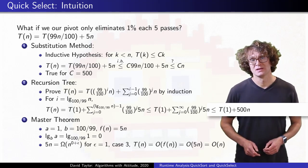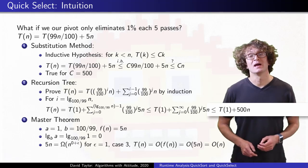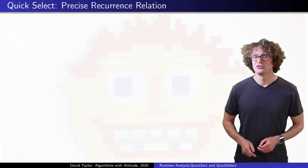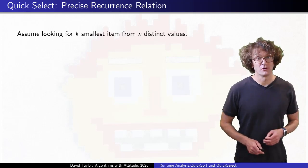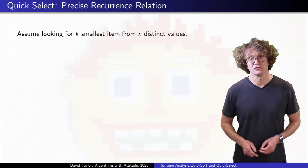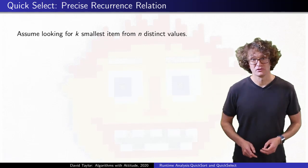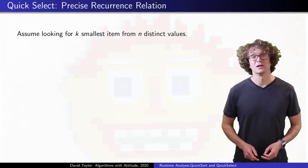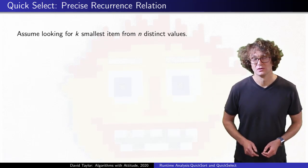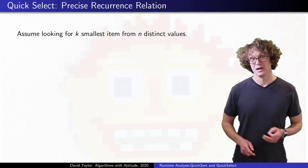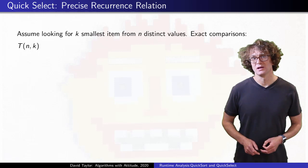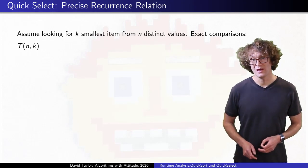But what if we want to make it a bit more formal and accurate? I am assuming that we are looking for the kth smallest item, where the first smallest item is the smallest item, the nth smallest item is the largest item, and all items are distinct. Our runtime might depend not only on n, but on k. Can we write down an accurate recurrence relation for that?